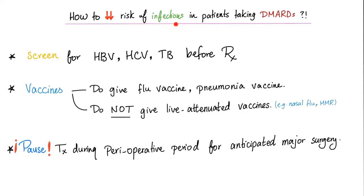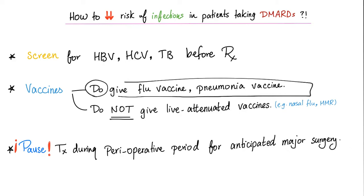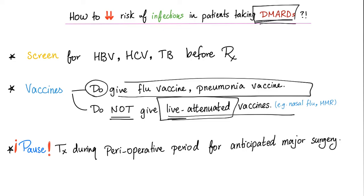How do you decrease the risk of infections in a patient taking DMARDs? Screen for infections before prescribing. Give vaccines — flu vaccine, pneumococcal vaccine, etc. You should not give live attenuated vaccines, because these drugs suppress immunity and live attenuated vaccines are not recommended for immunocompromised patients, including those on DMARDs, any immunosuppressants such as renal transplant patients, and pregnant mothers.